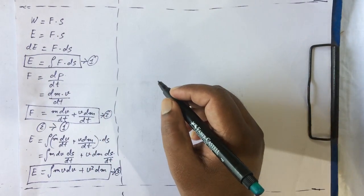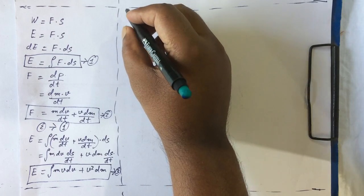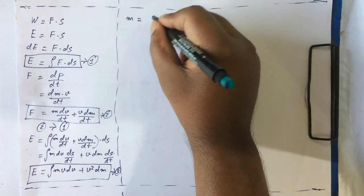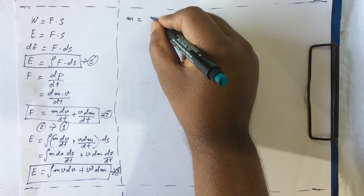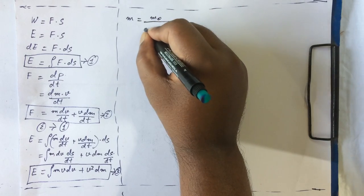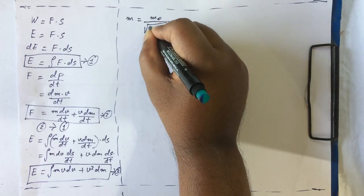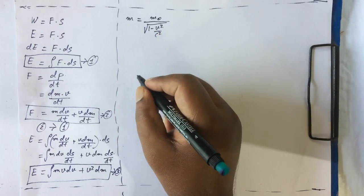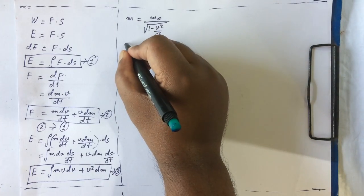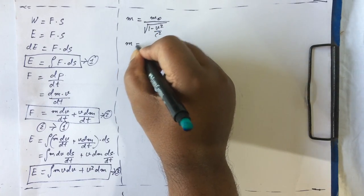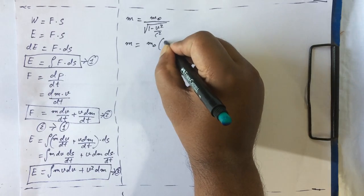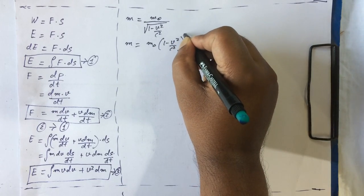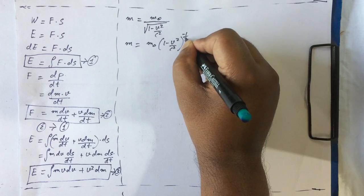Now from relativity, we know that relativistic mass is m0 divided by the square root of (1 minus v²/c²). We can also write it as m0 times (1 minus v²/c²) to the power of minus one-half.